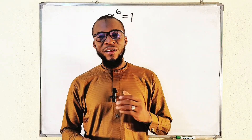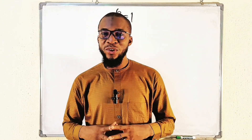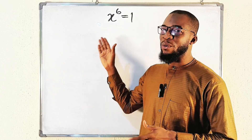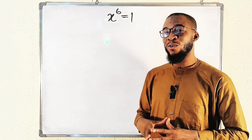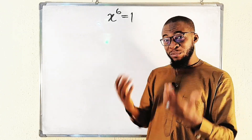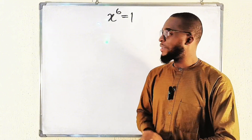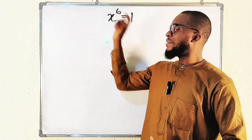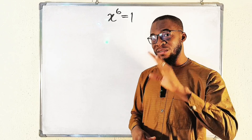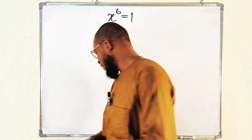Hello, dear viewers. In this tutorial we are going to find a solution to this very interesting, simple-looking equation: x to the power of 6 equals 1. It is simple to the eyes, but it is not that simple. This is a 6th-degree equation, therefore we expect 6 different solutions. Let's get started.